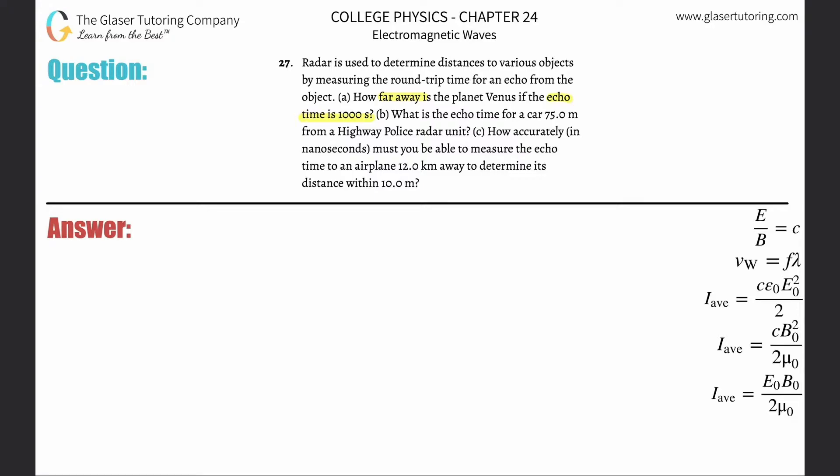So what I can do is give you a simple formula here. Let's say the velocity, or the speed, is going to be equal to the distance over time. The speed is going to be equal to the distance over time, that we know.